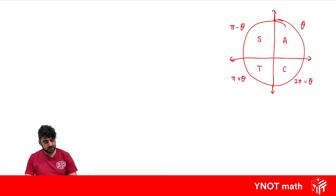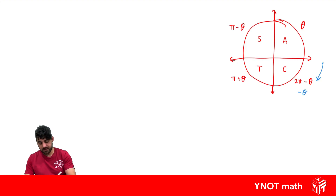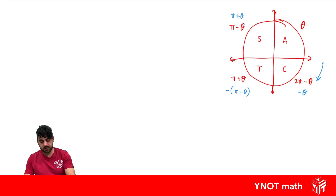This is going around in a positive direction. If we were going in a negative direction, this one would be minus theta, this one would be minus pi minus theta — the same angle in the second quadrant, just negative. This would be the same angle in the third quadrant, just negative, and this would be the same angle in the fourth quadrant, just negative.